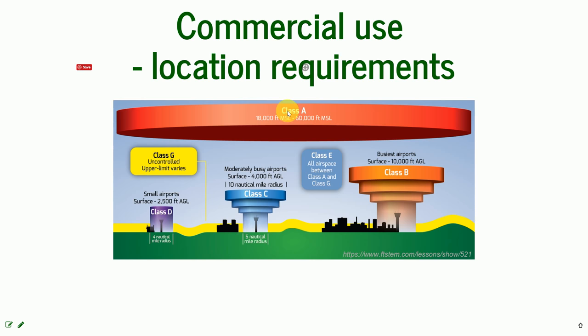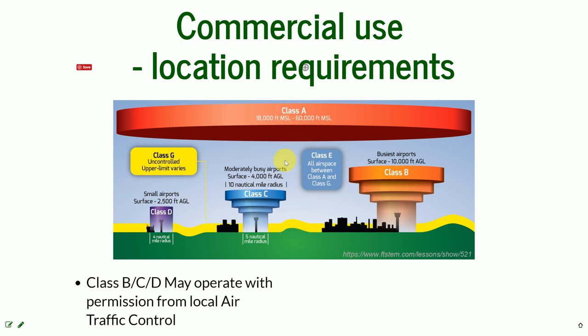There is Class A, which is everything above 18,000 feet, and it is forbidden to fly a drone there. There is Class B, C, and D that are closer to airports, and you can operate the UAS there only with the permission of the local air traffic control.